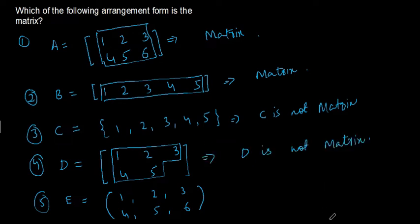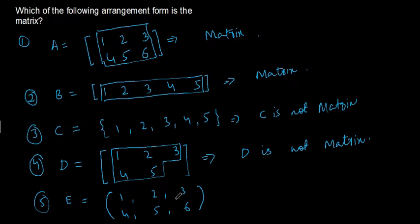In part 5, arrangement E uses parentheses but the numbers are separated by commas. Due to these commas, the arrangement is not a matrix.